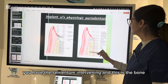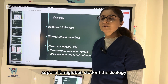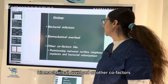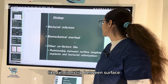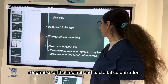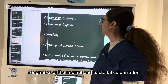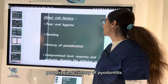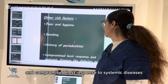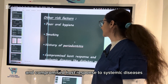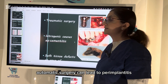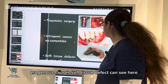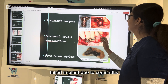Peri-implantitis etiology can be bacterial infection, biomechanical overload, or other co-factors like the relationship between surface roughness of the implant and bacterial colonization. Other risk factors include smoking, poor hygiene, history of periodontitis, compromised host response, systemic diseases like diabetes, and traumatic surgery. Iatrogenic causes and soft tissue defects can also lead to peri-implantitis, as seen in the picture of a failed implant due to cementitis.